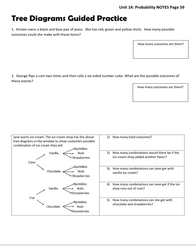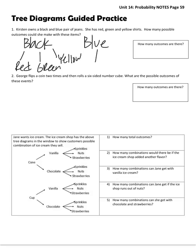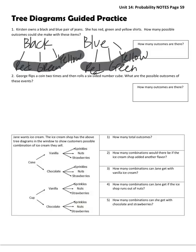All right, so we have black jeans and blue jeans. And she has red, green, and yellow shirts. Red, green, and yellow. All right, so how many outcomes are there? So you want to count these here. So count the lowest branch on your tree. So 1, 2, 3, 4, 5, 6. There are 6 outcomes.